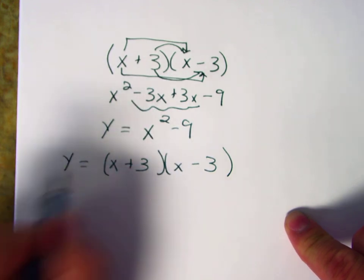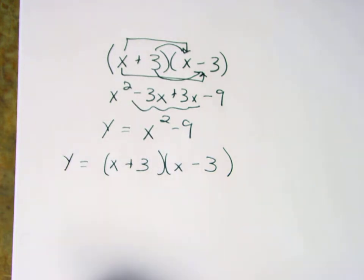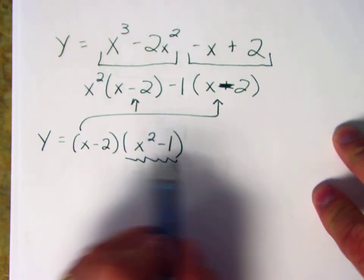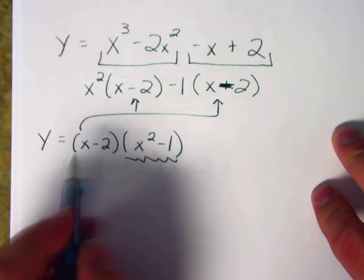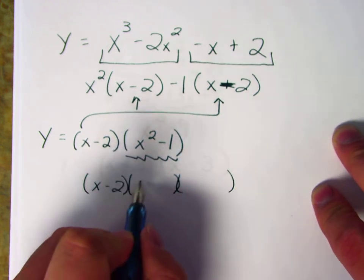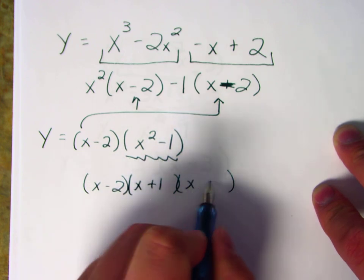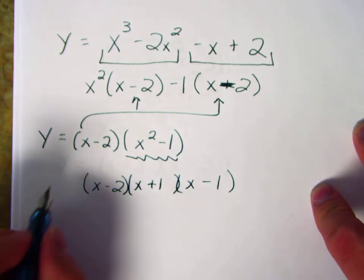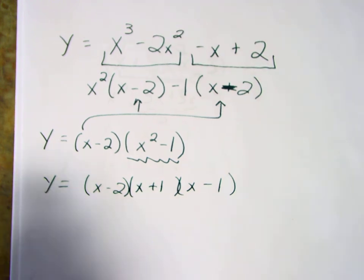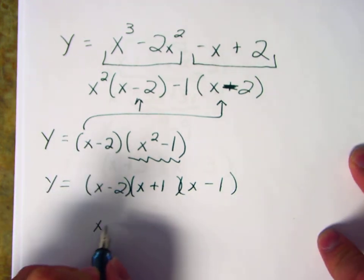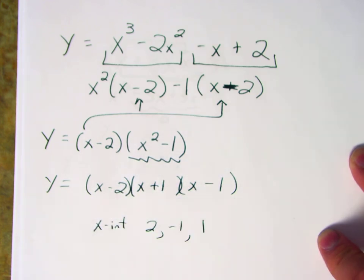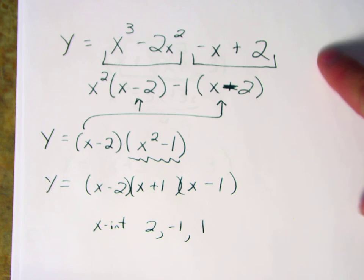Going back to our earlier example, (x squared minus 1) is a difference of squares and isn't completely factored yet. So we keep (x minus 2) and factor (x squared minus 1) as (x plus 1)(x minus 1). Now we have all our factors. Since this is an x cubed polynomial we expect three factors, and our x-intercepts are going to be at 2, negative 1, and 1.